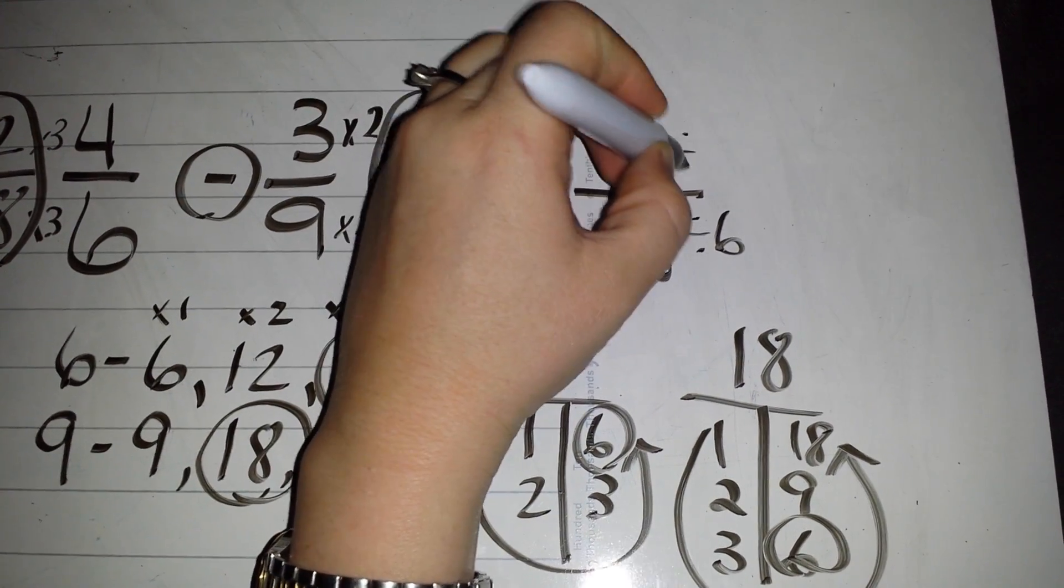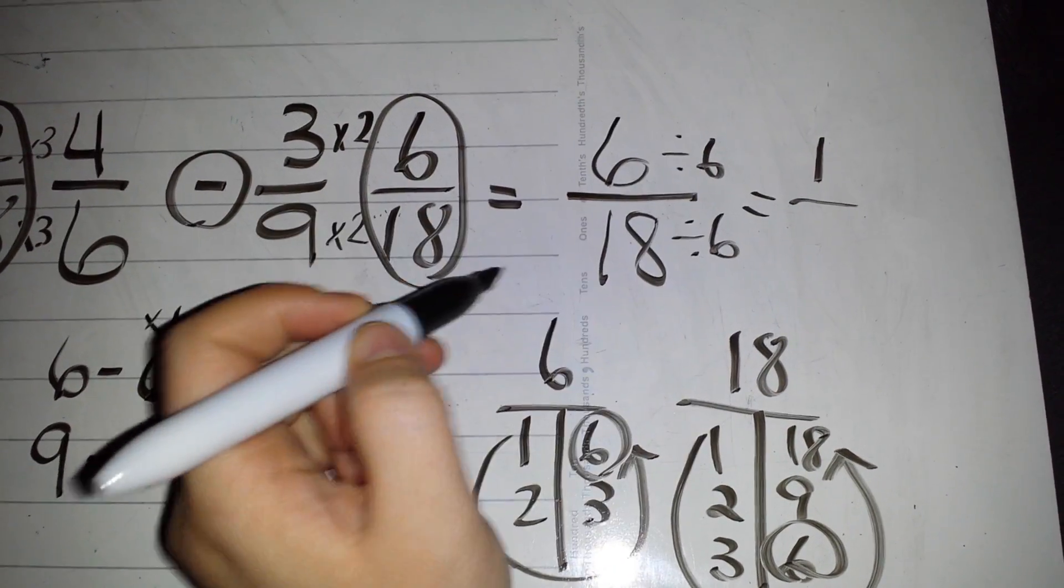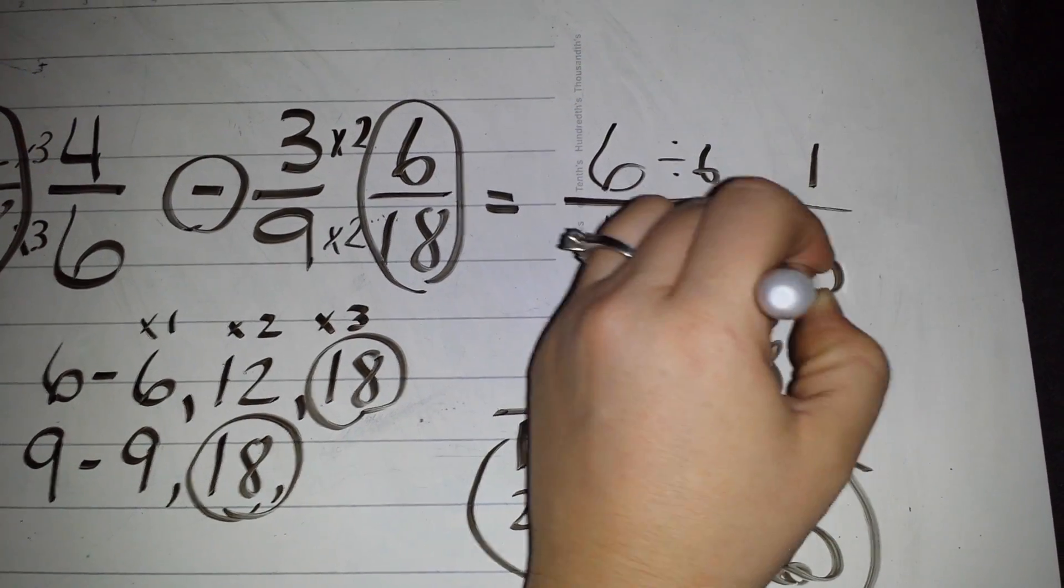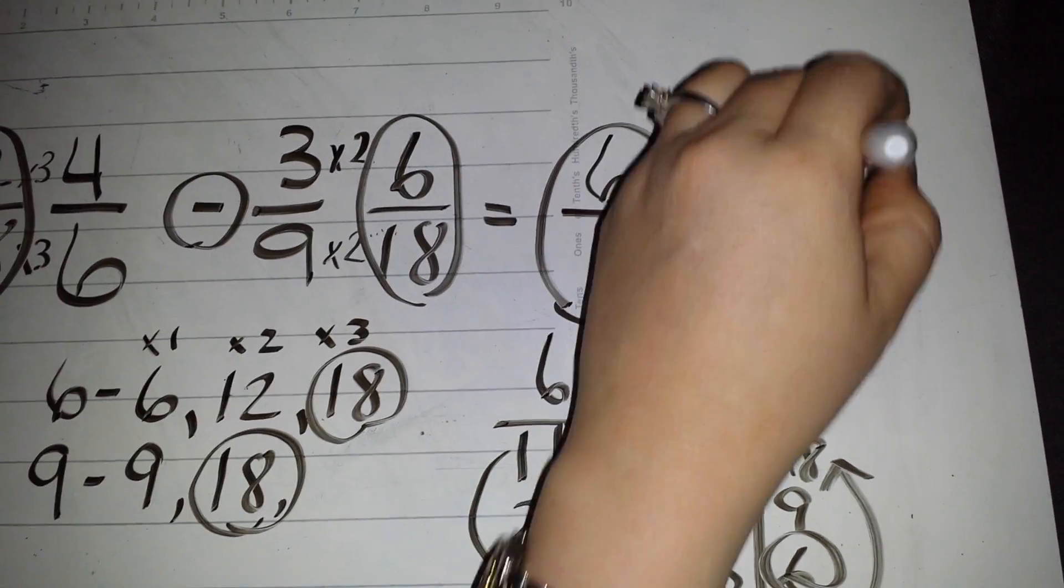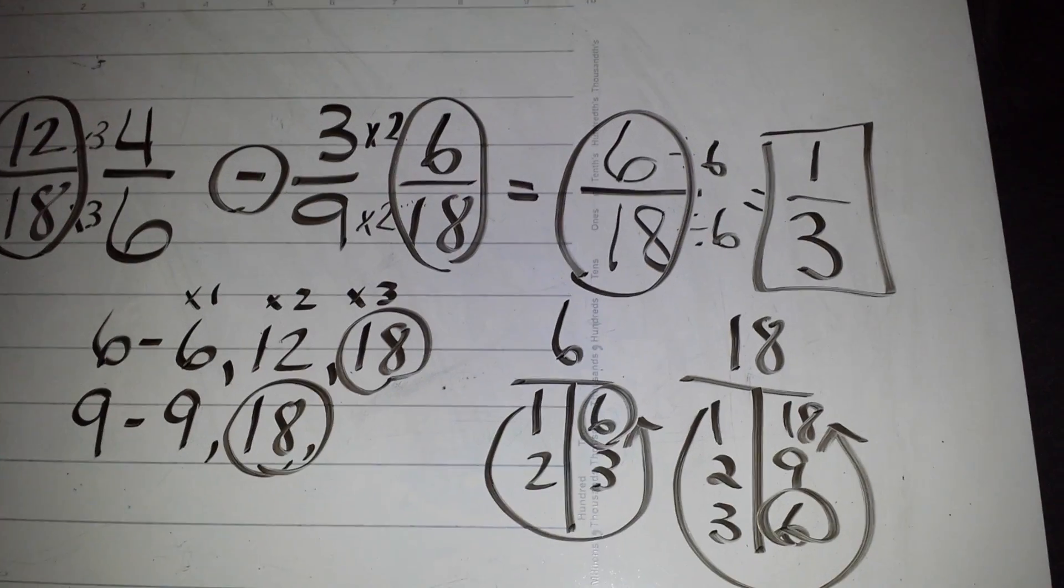What I do to the bottom, I do to the top. Six divided by six is one. Eighteen divided by six is three. This was my first number. This is my reduced answer. Good luck guys. Be good for the sub.